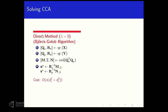How do you solve CCA? There is a direct method, the Bjork-Golub algorithm. You start by orthogonalizing X and Y via QR factorization to get orthogonal bases Q_X and Q_Y. Then you multiply these two matrices and perform an SVD, from which you find the U and V you're looking for. The cost is ND^2 — specifically ND_X^2 + ND_Y^2 — which is pretty good, but we want to reduce this dependence.